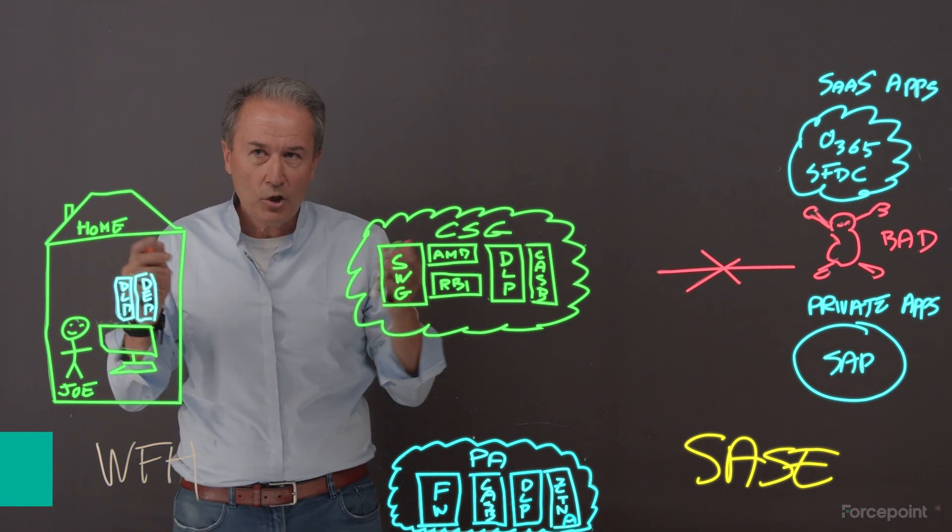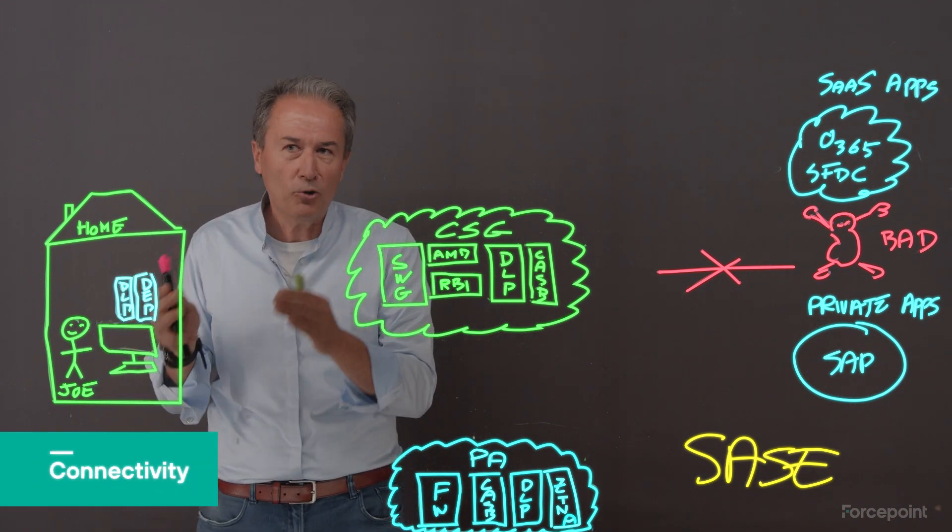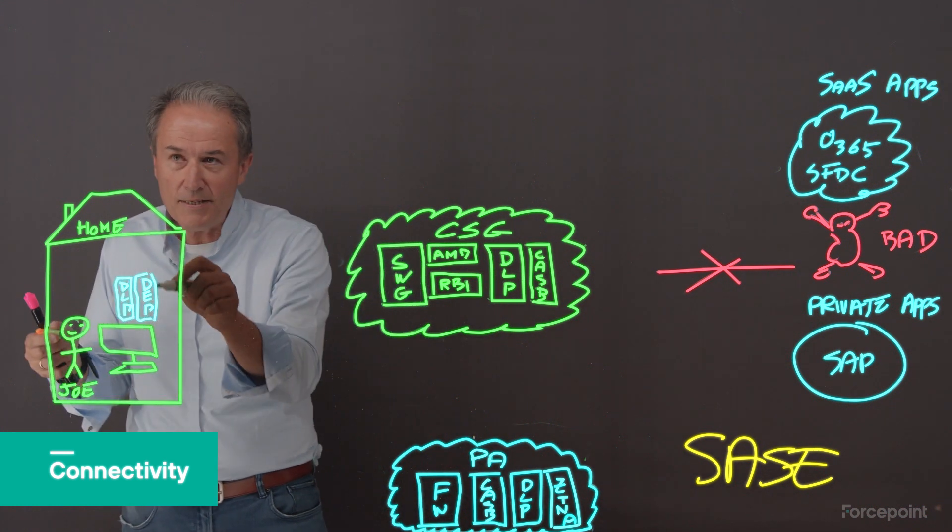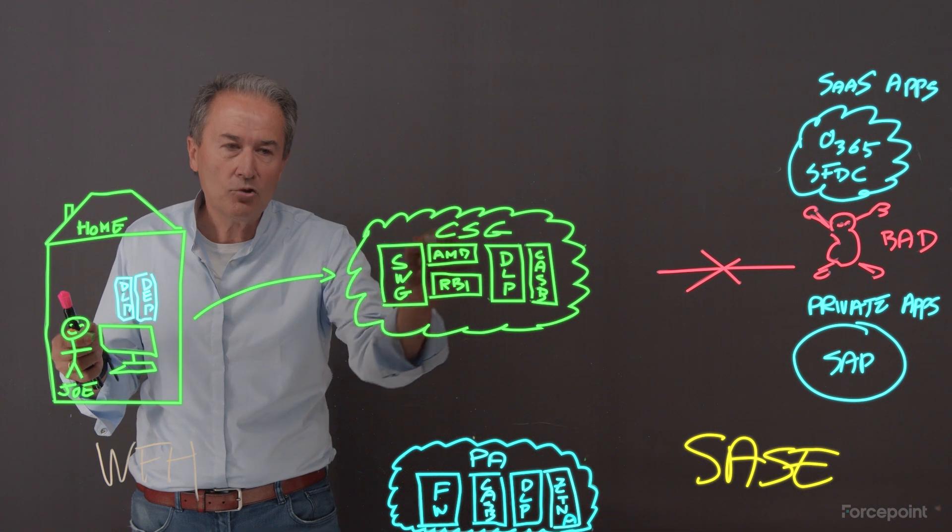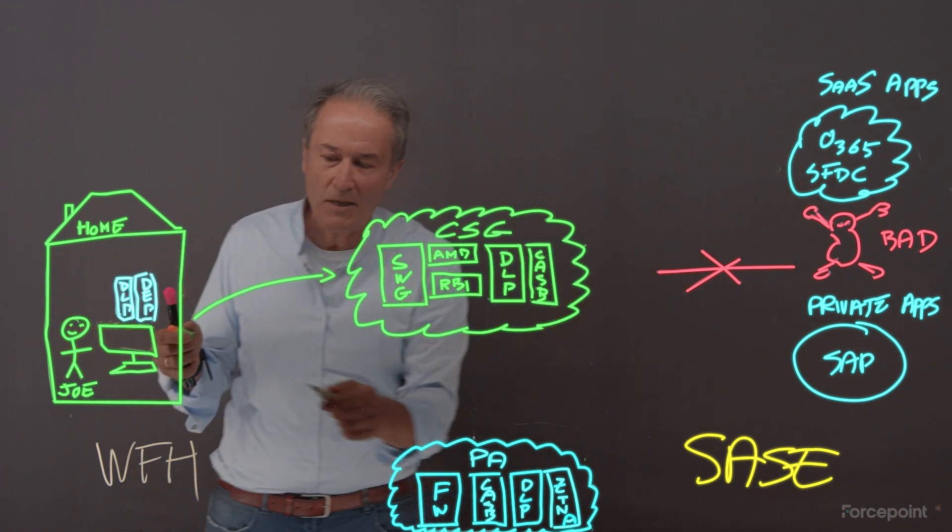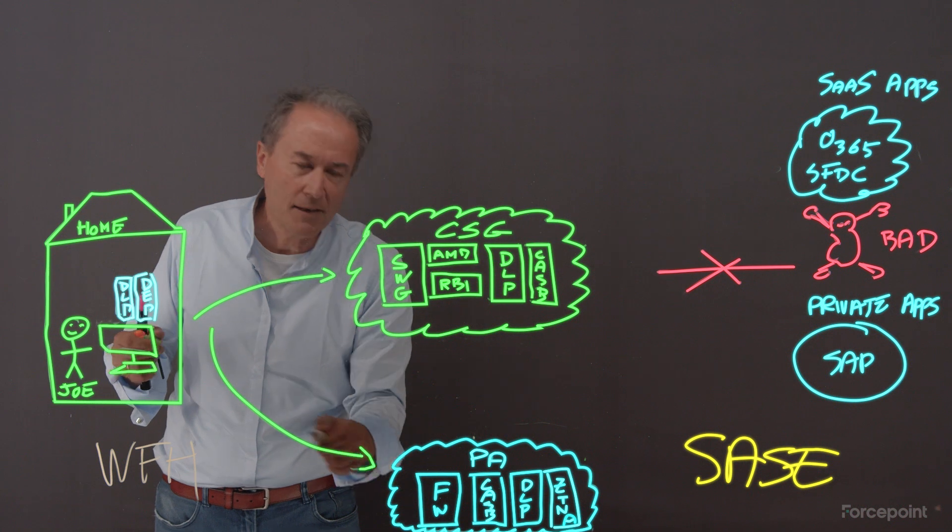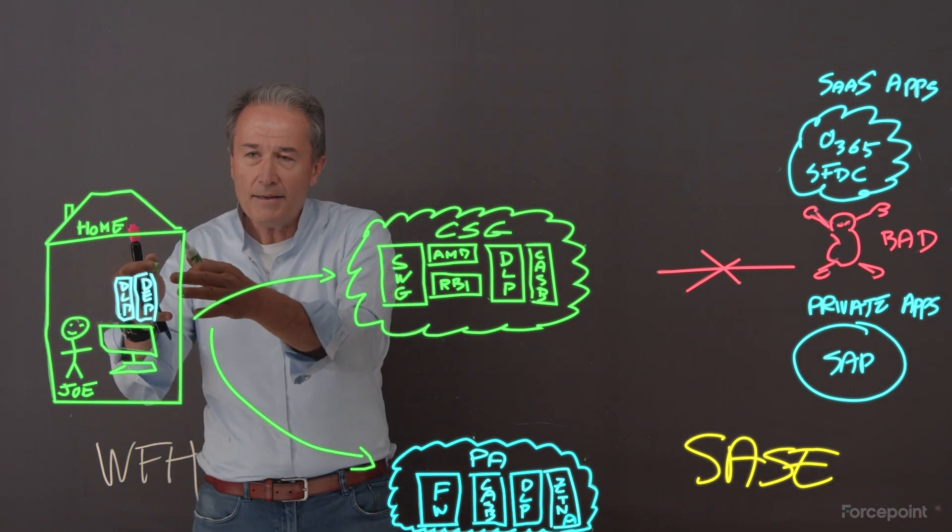Horsemen number two, connectivity. We want Joe to be able to work from home. So we had this intelligent agent steering the traffic to the cloud security gateway to access the SASE application or the private access.